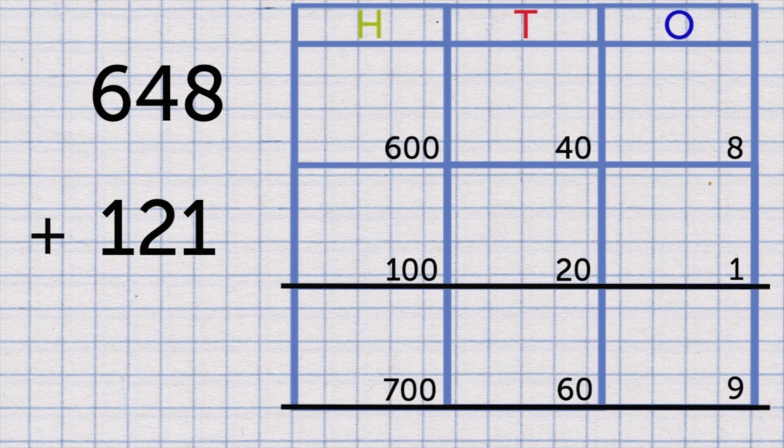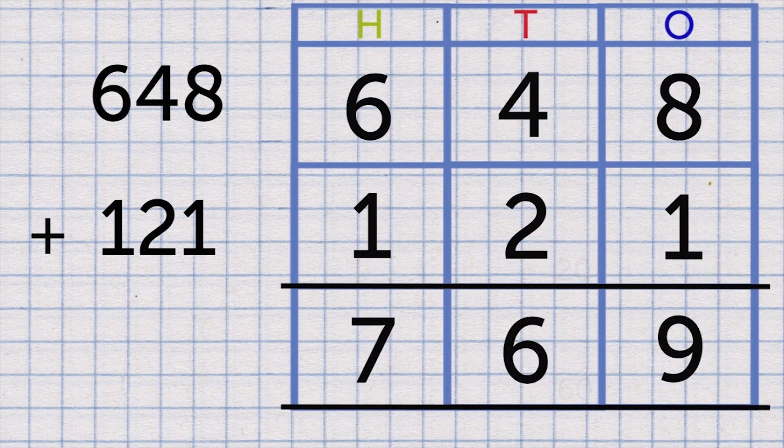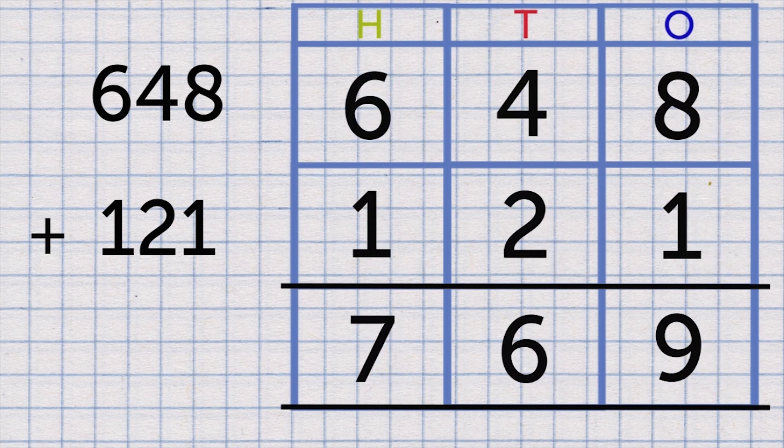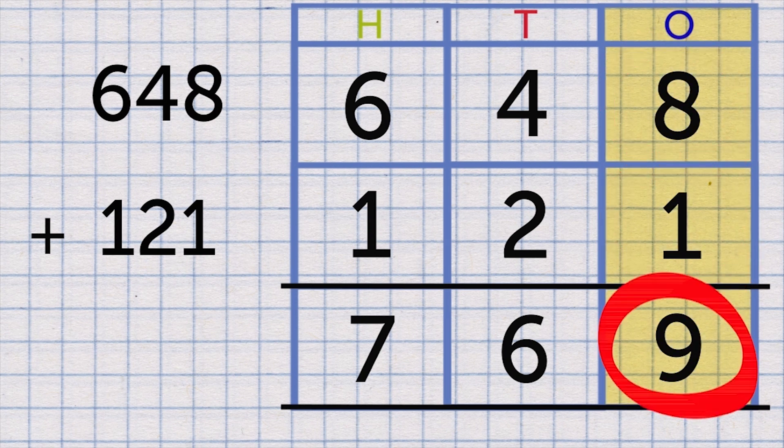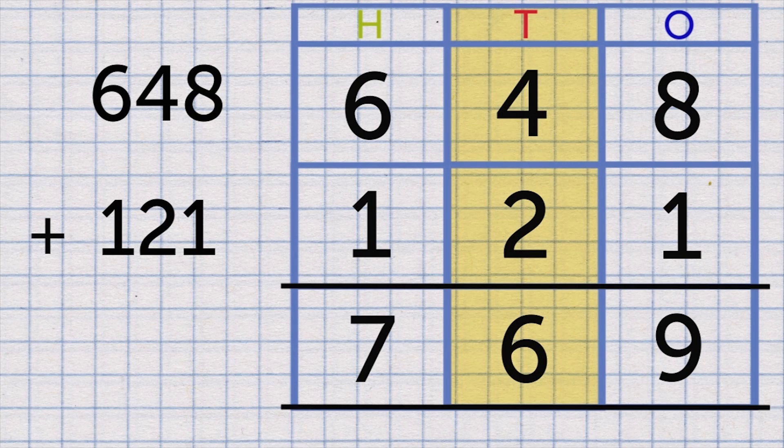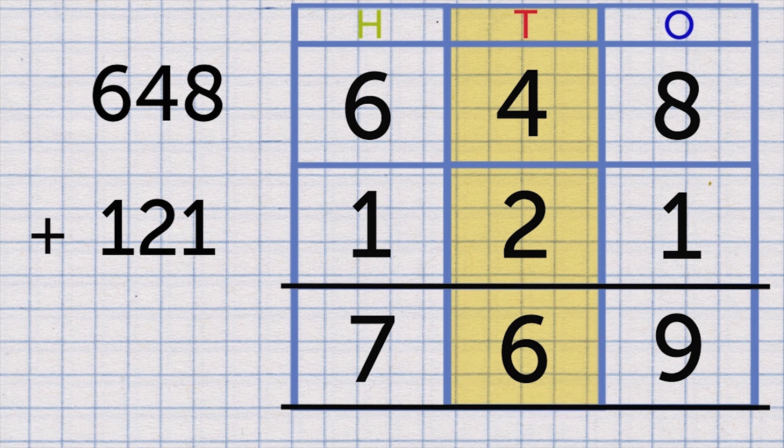Let's check by adding the numbers again. Start by adding the ones together: 8 and 1 makes 9. Next, the tens: 40 and 20 is 60. That's 6 in the tens column.